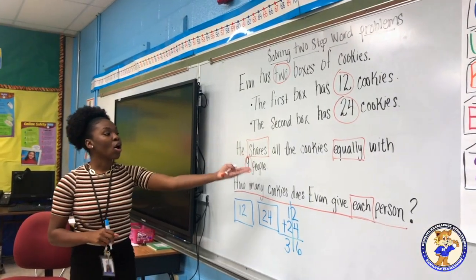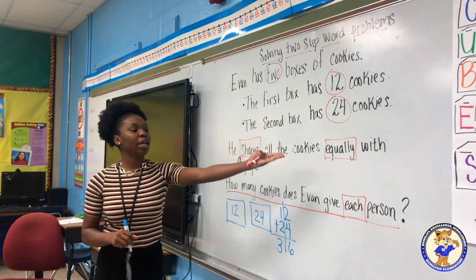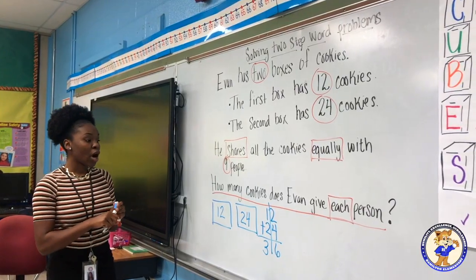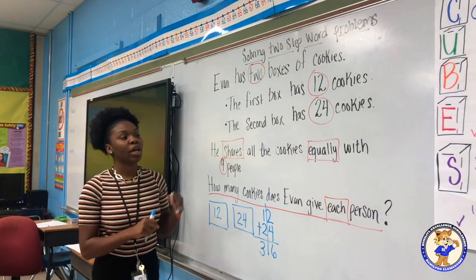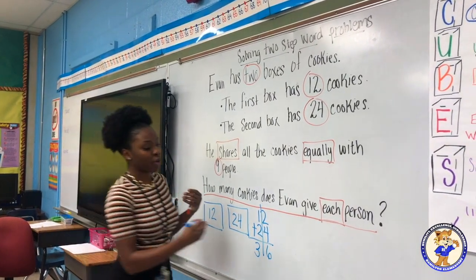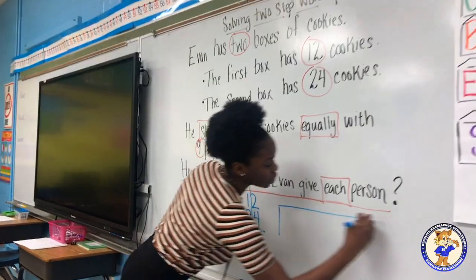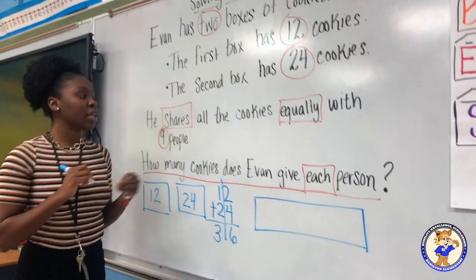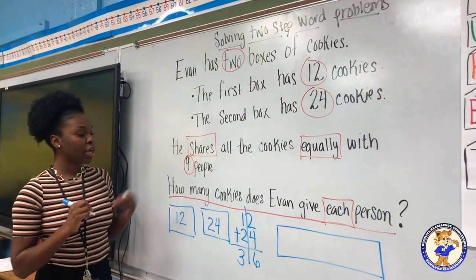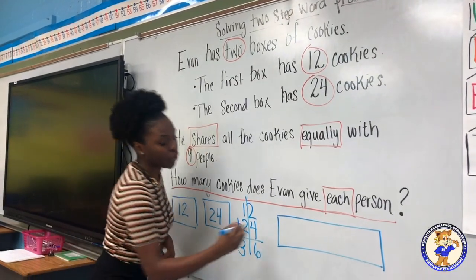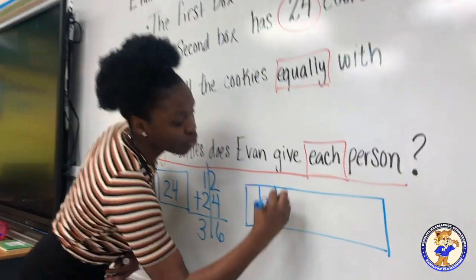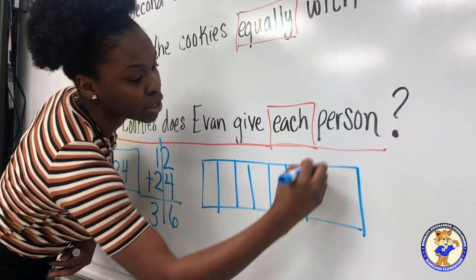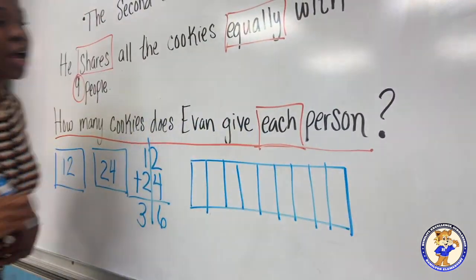He shares all the cookies equally with nine people, so we know we have nine people. Our next step is to draw a tape diagram. We're going to start with a rectangle divided into nine equal parts because we have nine people: one, two, three, four, five, six, seven, eight, nine.